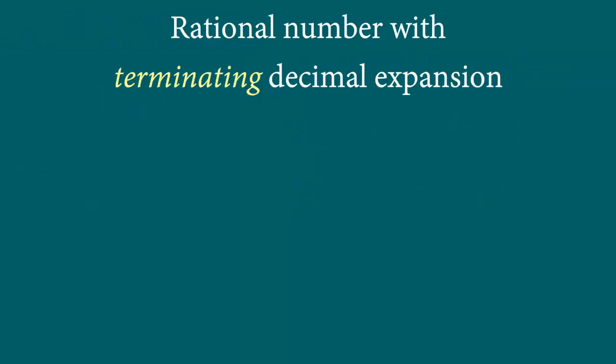Now in the last video, we looked at the first theorem which simply stated that if we have a terminating decimal expansion, if we have such a rational number, then that rational number we can write it simply in the form of p by q, where p, q are co-prime and q can then only have prime factors 2 and 5.